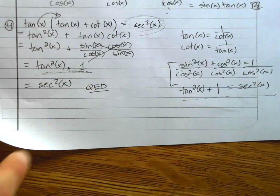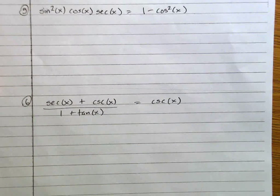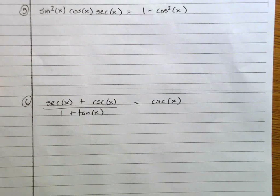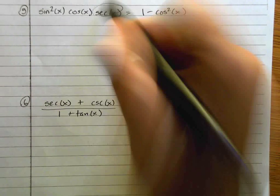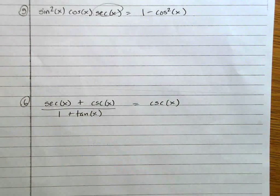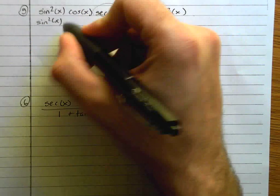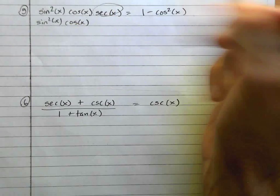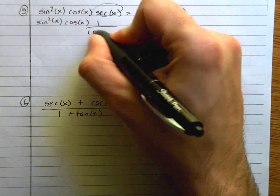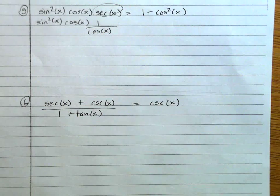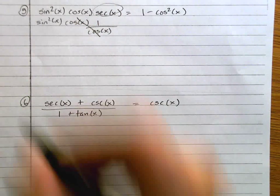Number 5. Number 5 allows us, again, something nice. We've got a secant. That tells me I can rewrite that guy. So I'll rewrite everything down. Sine squared, cosine x, secant is 1 over cosine. What happens right away? That's right. This stuff crosses off. It becomes 1. So now I just have sine squared x on the left-hand side.